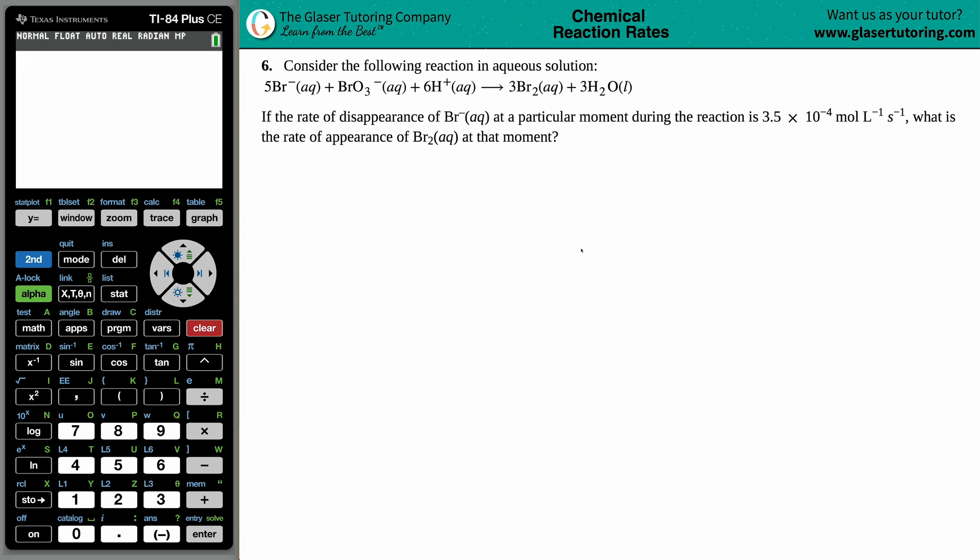Number six, consider the following reaction in aqueous solution. We have 5 Br minus aqueous plus BrO3 minus aqueous plus 6 H plus aqueous, which will yield 3 Br2 aqueous plus 3 H2O liquid.